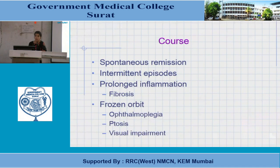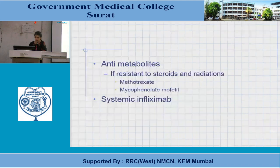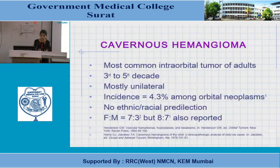If pseudotumor is persistent, fine needle aspiration cytology may be performed. There is usually spontaneous remission but with intermittent episodes. If prolonged inflammation occurs, fibrosis of extraocular muscles leads to frozen orbit, ophthalmoplasia, and visual impairment. Treatment is mainly steroids. For mild inflammation: oral non-steroidal anti-inflammatory drugs. For severe inflammation: systemic steroids. If unresponsive to steroids: radiotherapy. If contraindicated to steroids: anti-metabolites such as methotrexate or mycophenolate mofetil, or systemic infliximab as anti-cytokine therapy.